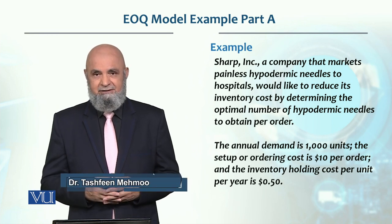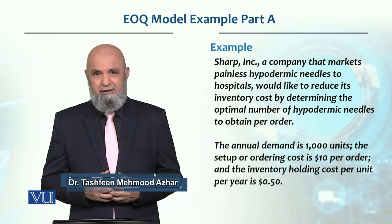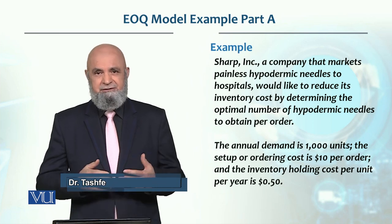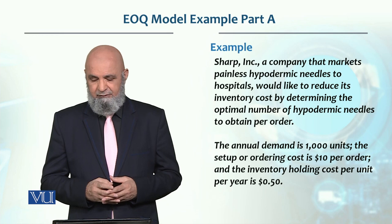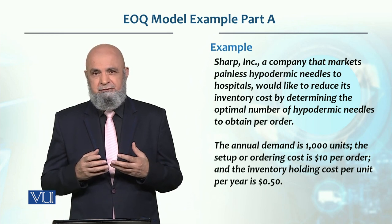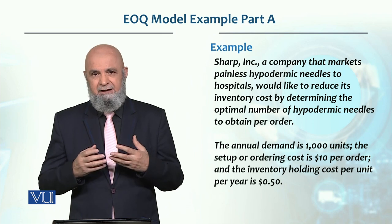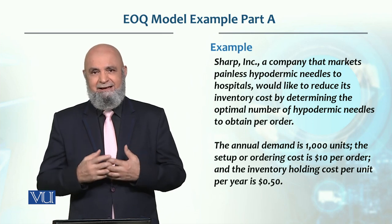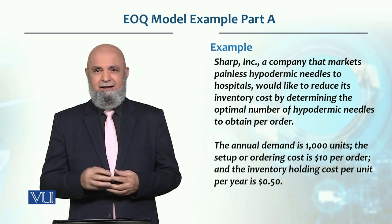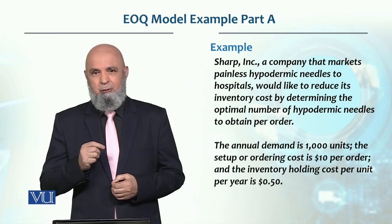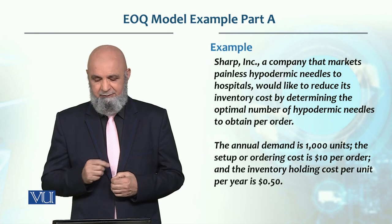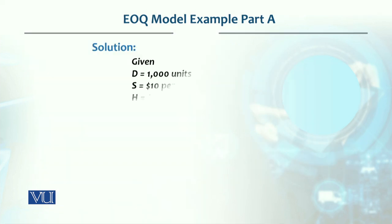The ordering cost, or setup cost — both terms used interchangeably — is $10 per order. The inventory holding cost, or inventory carrying cost, is $0.50 per unit per year. That is, if we keep one needle in inventory for one year, its cost will be 50 cents or $0.50 per year.